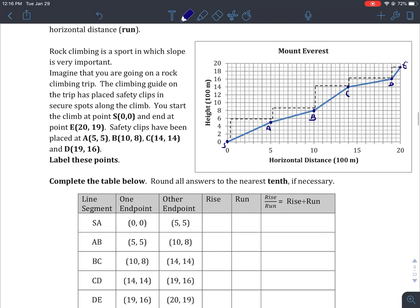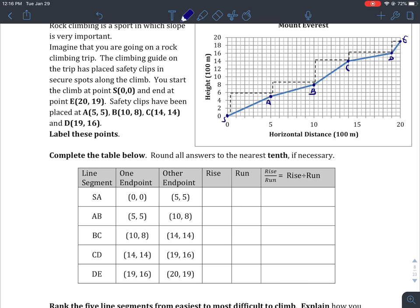We're asked to complete the table below. Round all answers to the nearest tenth if needed. We're going to calculate the rise and the run for each of these. The rise is the difference between the y-coordinates. My rise here is going to be 5 and my run is also 5. Rise over run, we divide those two numbers, and we'll find our slope.